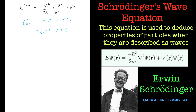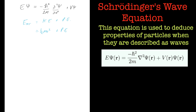Now we have to think about this half mv squared so we can actually derive this part of the equation. Another way of writing half mv squared is to say p squared over 2m, and very quickly I'll go through this, but we'll keep this equation here to one side.